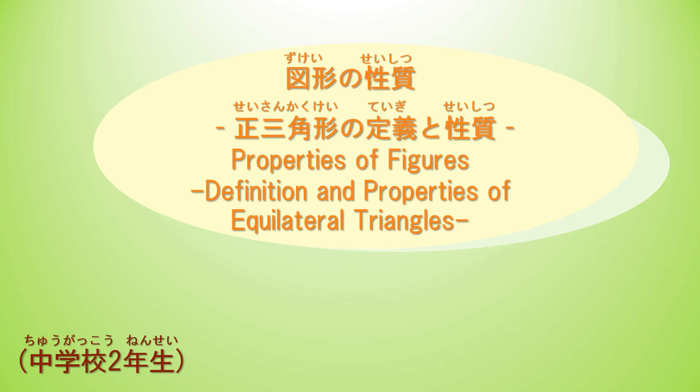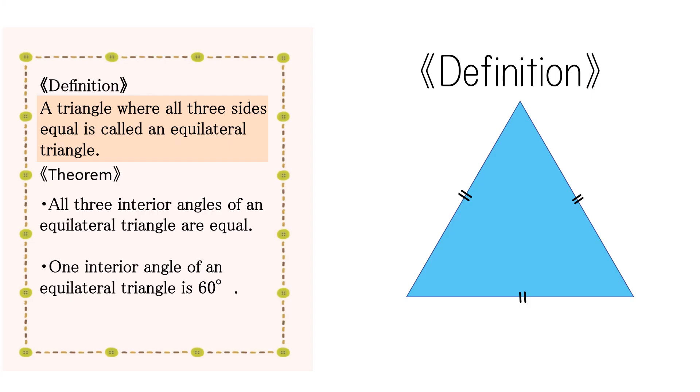First, let's go over terminology. A triangle where all three sides are equal is called an equilateral triangle.